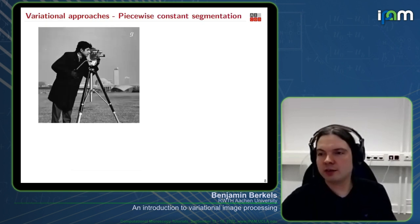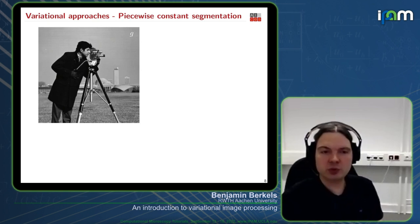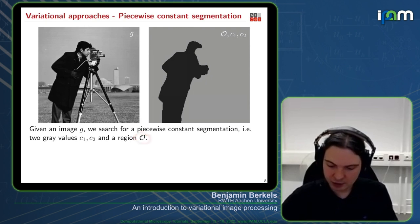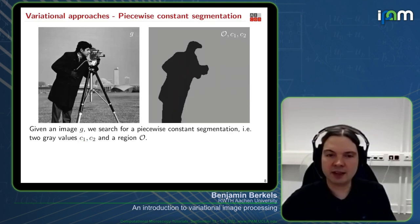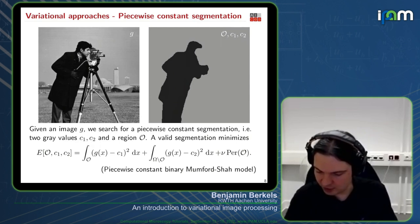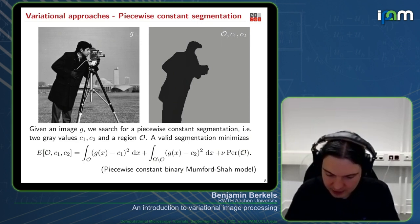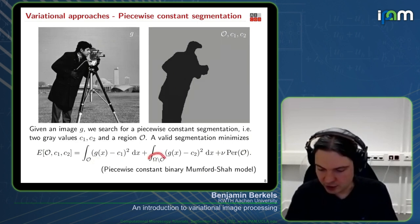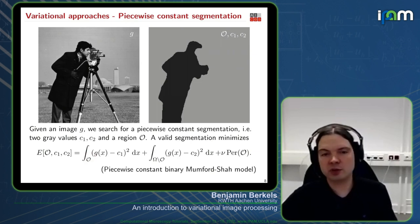Let's look at how other problems can be phrased as minimization problems. For image segmentation with input image G, one approach is to find a foreground region Ω, average gray value Z₁ for foreground, and Z₂ for background. A valid minimization minimizes the piecewise constant binary Mumford-Shah energy — inside the foreground we compare to the foreground color, inside the background to the background color, and we decide which points belong to each region accordingly.